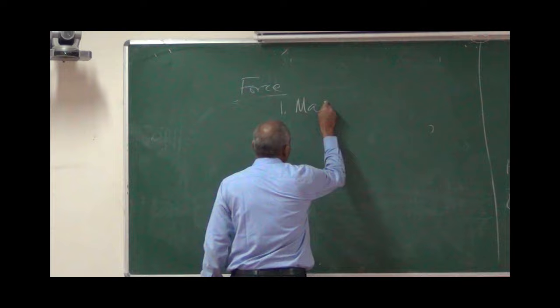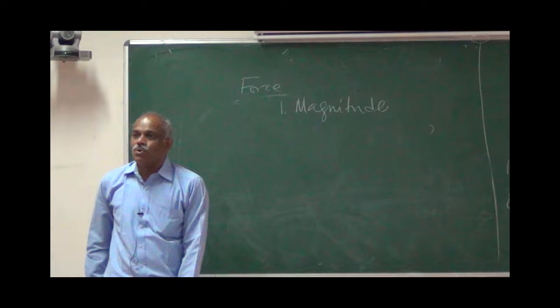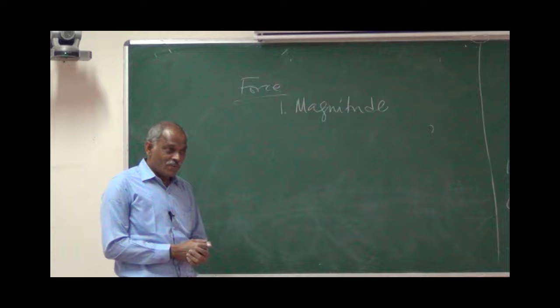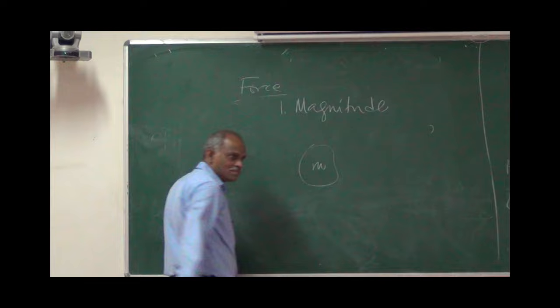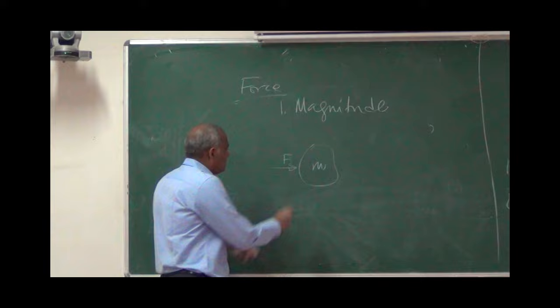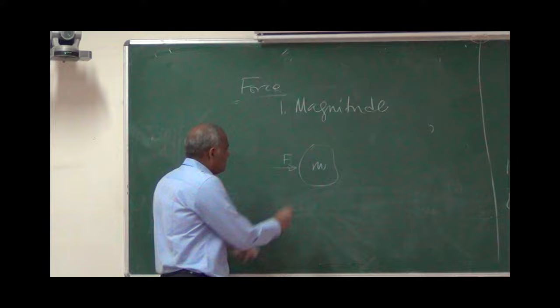The magnitude is related to how much acceleration it can produce on a particular mass. If I have a mass M and two forces F1 and F2, how do I distinguish between F1 and F2 in terms of magnitude? As per Newton's second law, the force that produces greater acceleration on the same mass is the greater force. You can quantify force by the acceleration it causes on a particular mass.